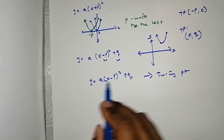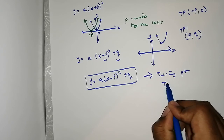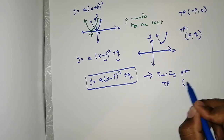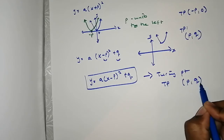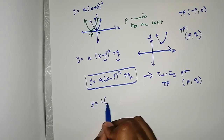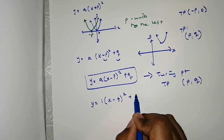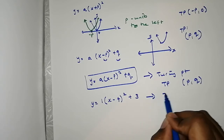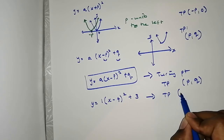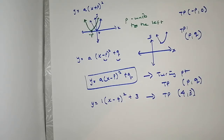For example, if you have y = 1·(x - 4)² + 3, the turning point is (4, 3). The advantage of having the equation in vertex form y = a(x - p)² + q is that we can read the turning point directly from the equation.